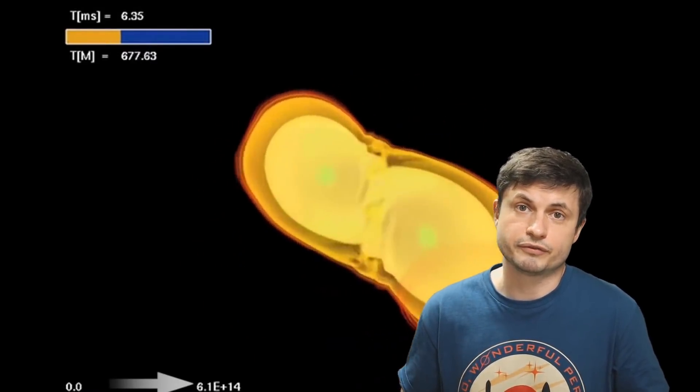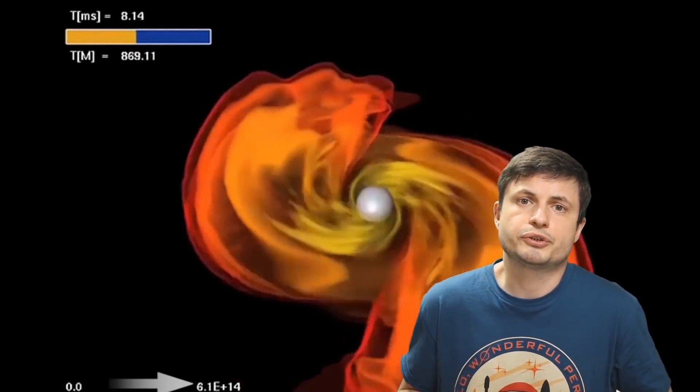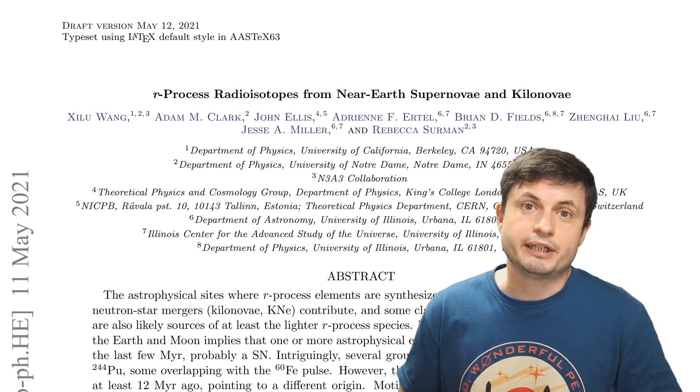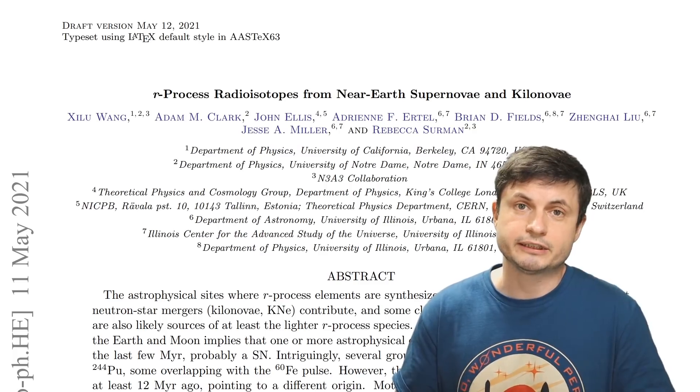Normally iron-60 is produced in a typical supernova, but plutonium-244 requires something more powerful. Because the proportions of iron-60 seem to be connected to plutonium-244, it does imply that whatever supernova brought the iron-60 might have also been responsible for creating a lot of these plutonium-244 particles as well. Based on the half-life of these elements, this really only suggests that this happened within the last 10 million years.